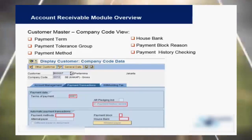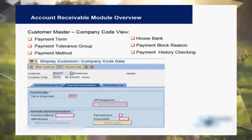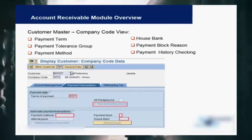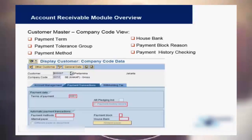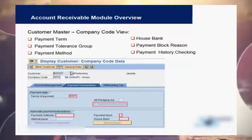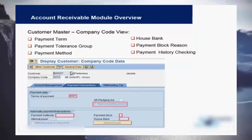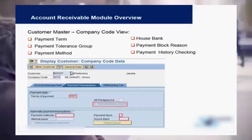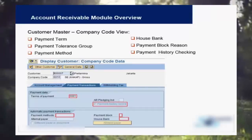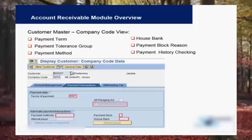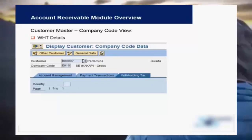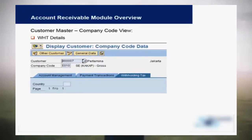The payment transactions tab is very important for accounting. Here you have the terms of payment — an agreed payment term between you and the customer — as well as the payment method, which defines the different ways the customer may make payment. It can be an incoming check, bank transfer, or SEPA transfer. Any payment blocks are also assigned here. If a company has withholding tax relevance, those details must be assigned in this tab as well.